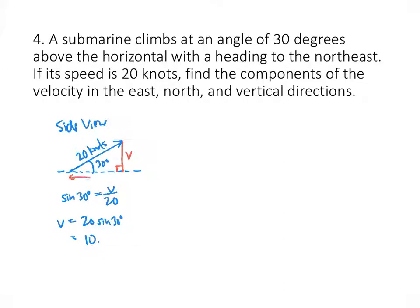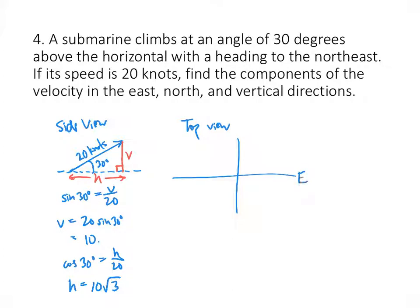The horizontal component H = 20 × cos(30°) = 10√3. But that 10√3 is not the X or Y component — we need to look at the submarine from the top down. From the top view, using compass directions, the submarine is heading northeast, and what we see is the projection onto the XY plane, which has length 10√3.